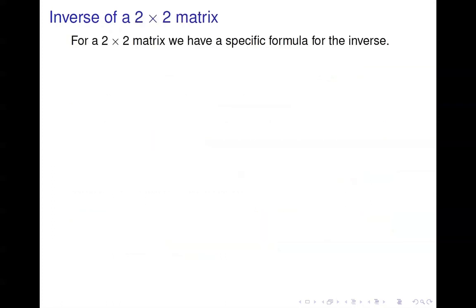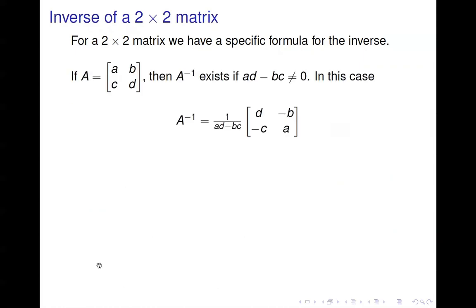Let's start off by talking about finding the inverse of a 2 by 2. In this case, there happens to be a specific formula for the inverse. So if we have a 2 by 2 matrix A that looks like A, B, C, D, then A inverse exists if A times D minus B times C is not equal to 0. That's A times D — multiply the elements on the main diagonal — and subtract off the product of the elements on the off diagonal, so A times D minus B times C.